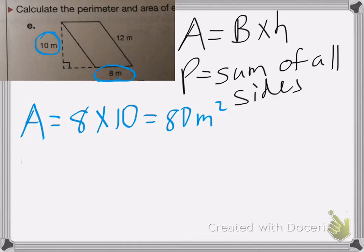Now the perimeter is the sum of all the sides. My height here is not one of the sides. It is just the height of my parallelogram. So I do not use the height when finding the perimeter.